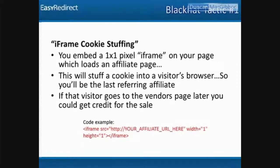One black hat method is iframe cookie stuffing. They embed a one-by-one pixel iframe — a website inside a website — making it invisible to the eye. They cram hundreds of these one-pixel iframes onto a page to drop affiliate cookies. The code looks like: 'iframe src=[affiliate url] width=1 height=1.' Before Amazon fixed it, people were dropping cookies all over Amazon products so that when users bought on their own, these black hatters got the credit. Nobody wins when that happens.